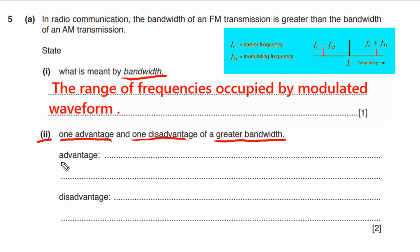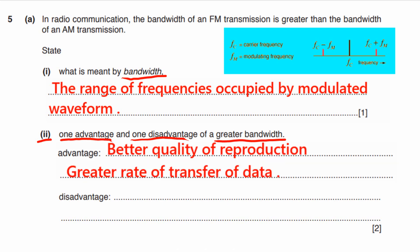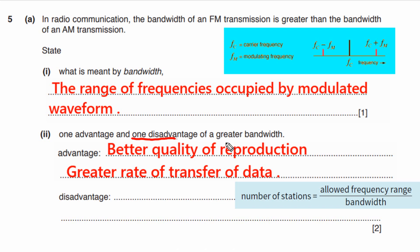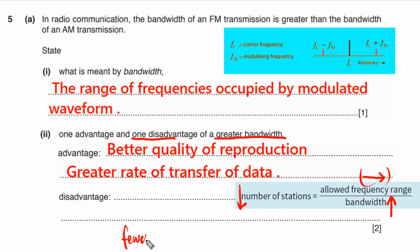Now let's write down one disadvantage of greater bandwidth. Greater bandwidth affects the number of stations: for a fixed frequency range, if we increase the bandwidth, the number of stations will go down. This means there will be fewer stations available. So the disadvantage is fewer stations can operate in the same frequency range.